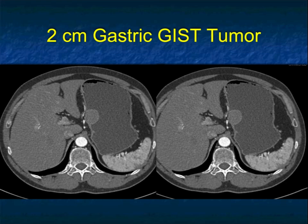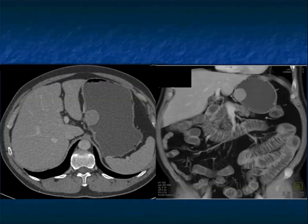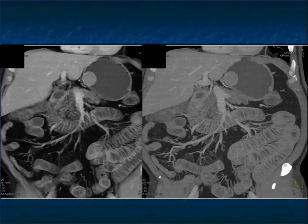Here's a two-centimeter homogeneous smooth mass in the stomach — a classic GIST tumor, though you could also think about a leiomyoma. Whether to resect a two-centimeter lesion is debated; this one was resected laparoscopically. You can see it very nicely on the images — a very smooth, nicely defined tumor.